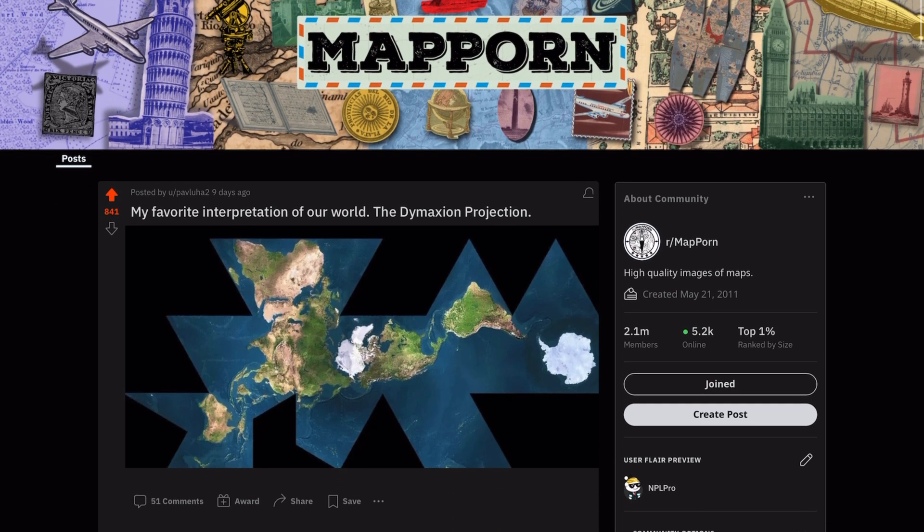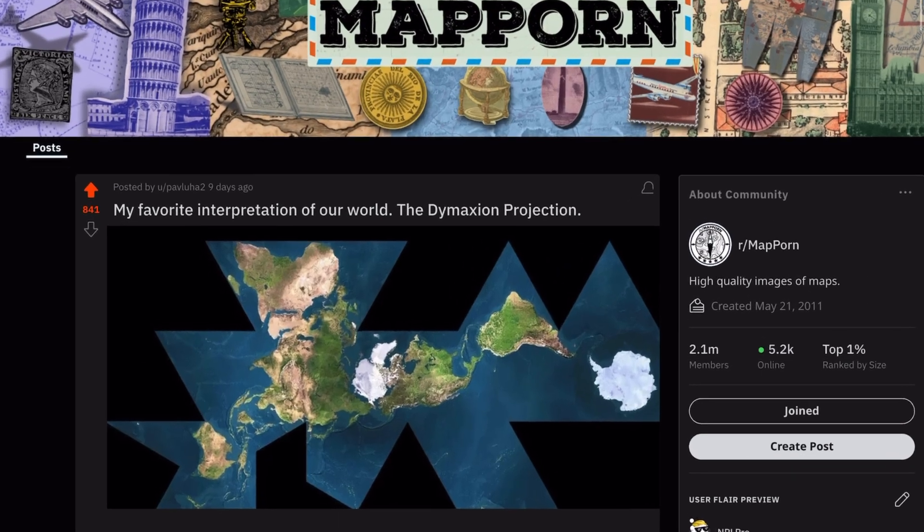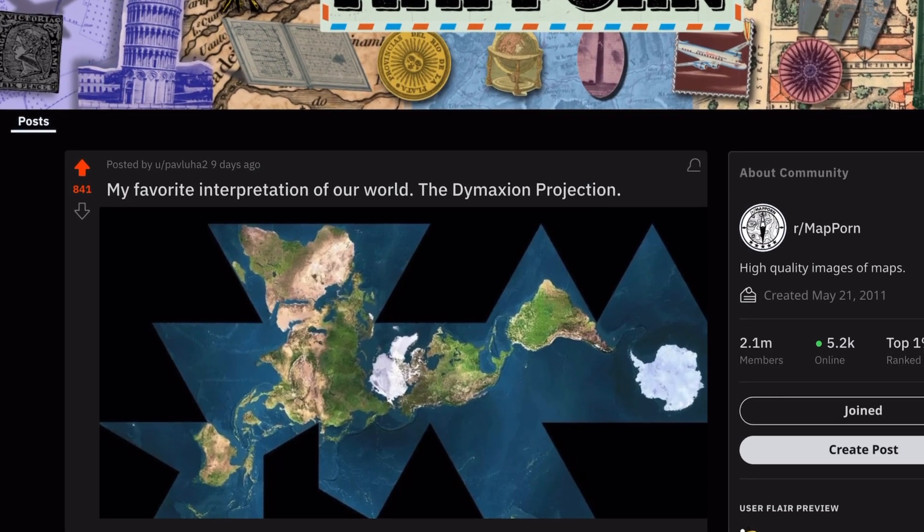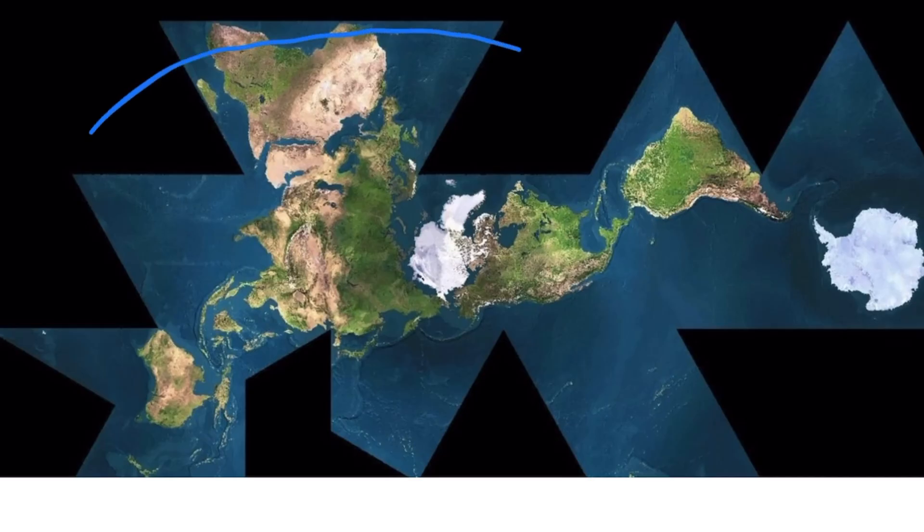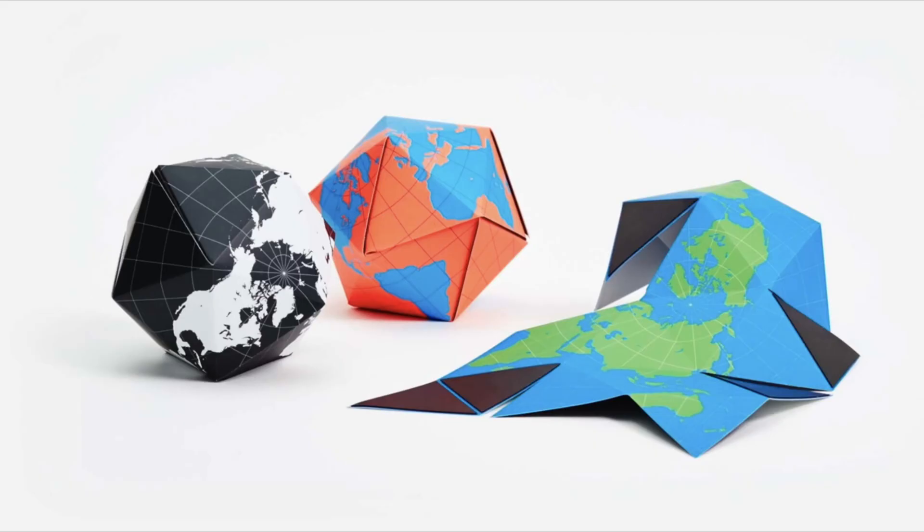Okay, so my journey began when I came across this map on r slash map porn. It's titled my favorite interpretation of our world, the Dymaxion projection, and at first glance this map seems like a strange kind of origami version of the world and that's actually exactly what it is. You can fold this back up and this is what it would look like.